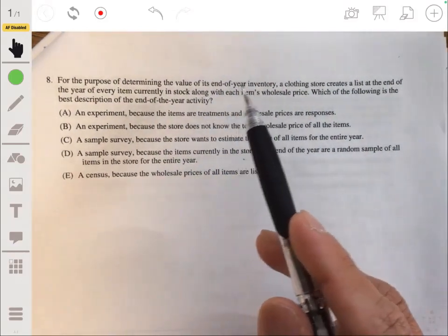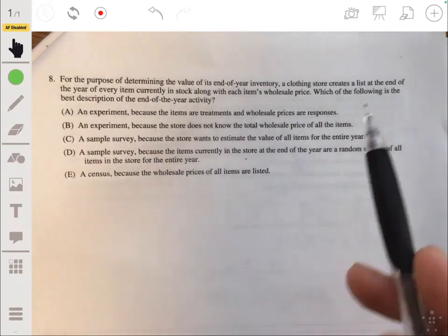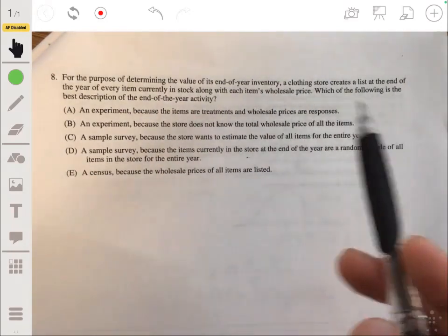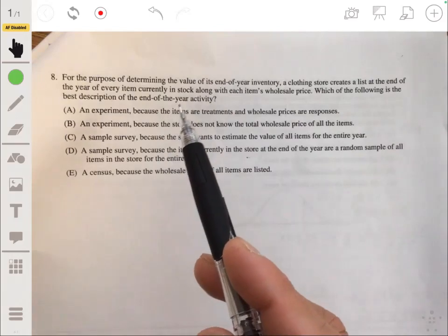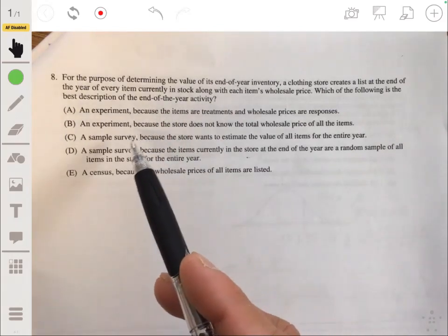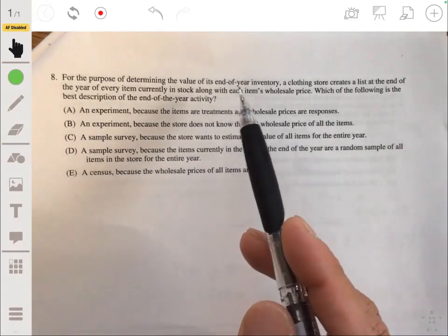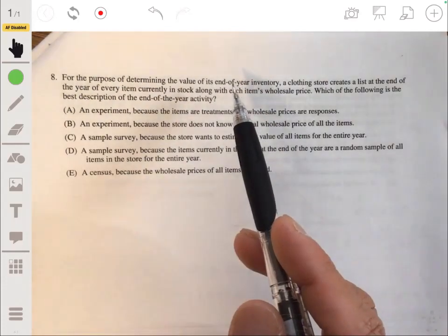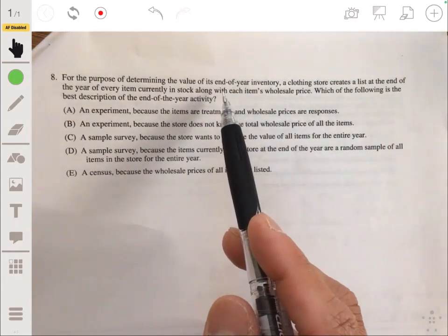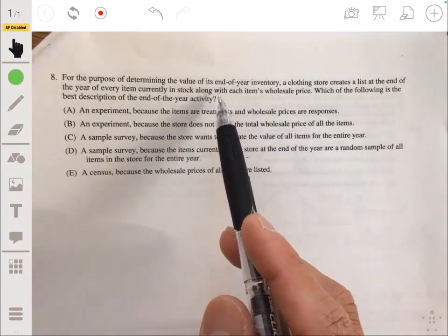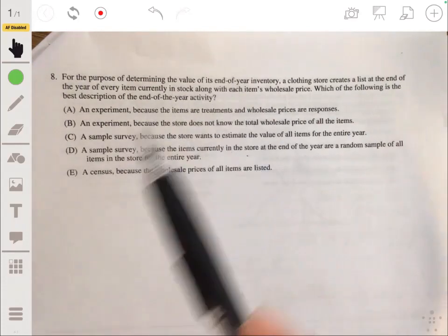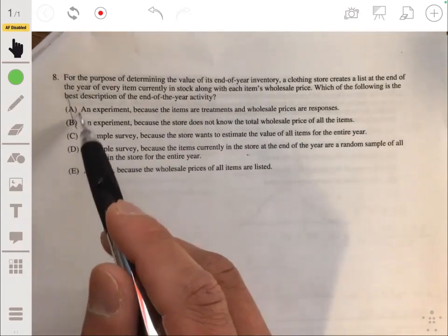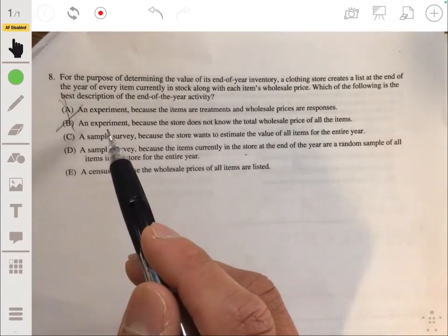For the purpose of determining the value of its end of year inventory, a clothing store creates a list at the end of the year of every item currently in stock along with each item's wholesale price. Which of the following is the best description of the end of year activity? Okay, so it looks like we're looking at experiments versus sample surveys versus census. This is not an experiment because in an experiment, you have to basically test something. You have to test the treatment and try to see if the treatment has an effect on your subjects. But we're not testing anything. We're just recording data. So this is not going to be an experiment for sure.